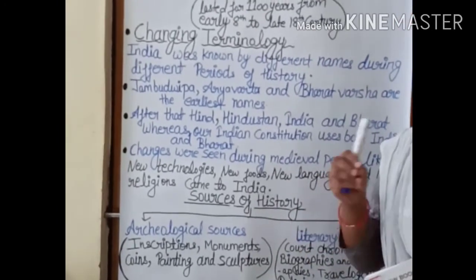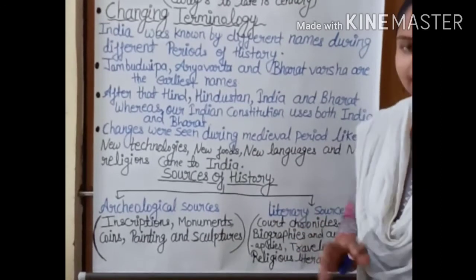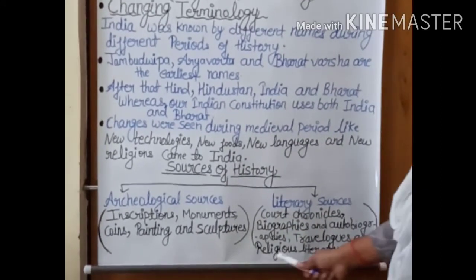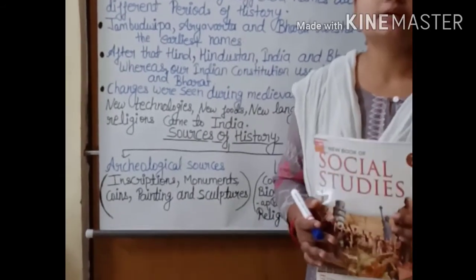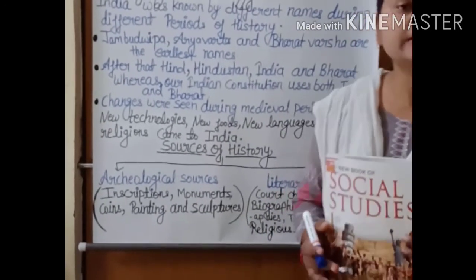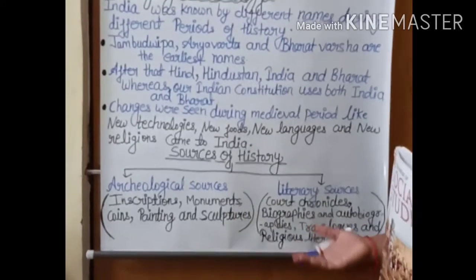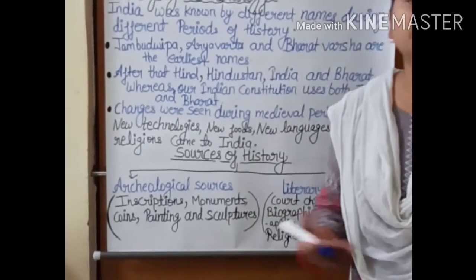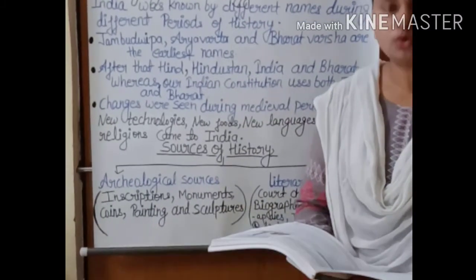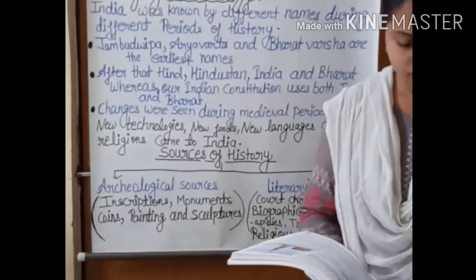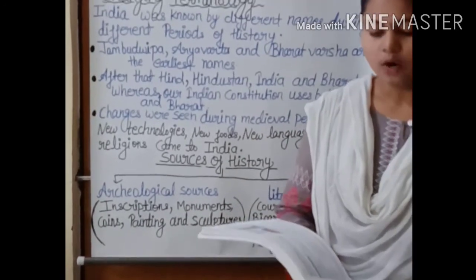In travelogues, travellers recorded what they had seen and what conditions were like during that time. Religious literature was also written during that time, such as the Ramayana and Mahabharata and similar texts. Calligraphy was also very important, and many handwritten manuscripts were written in the medieval period.